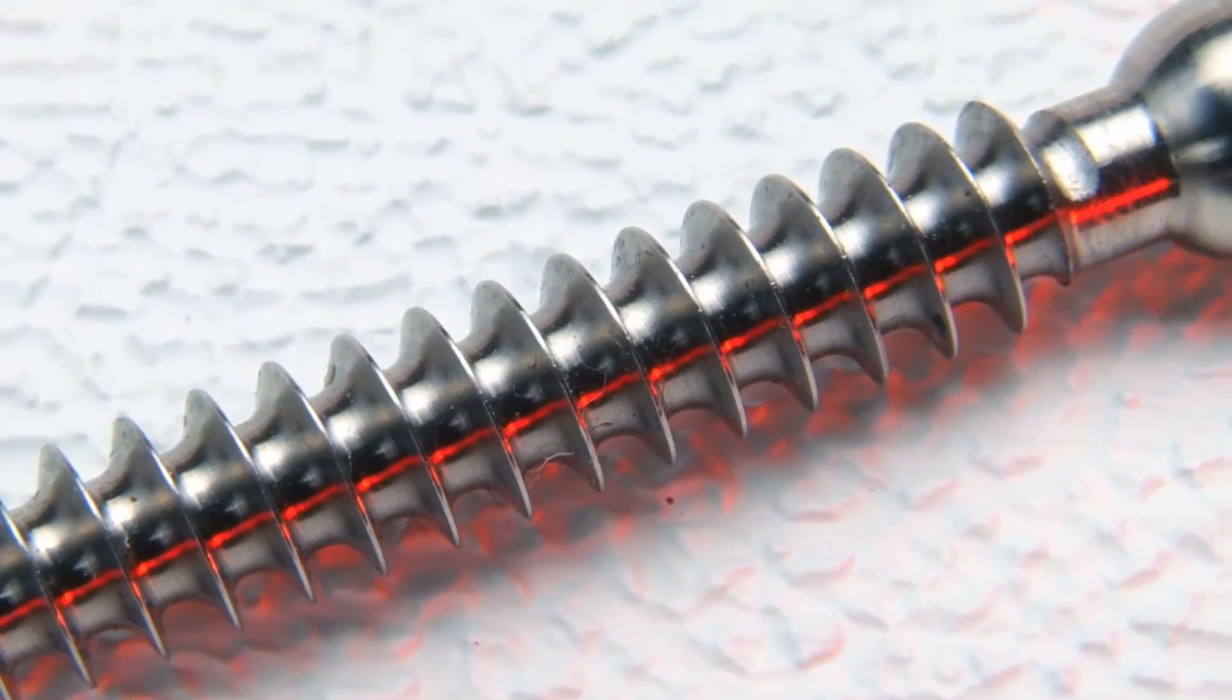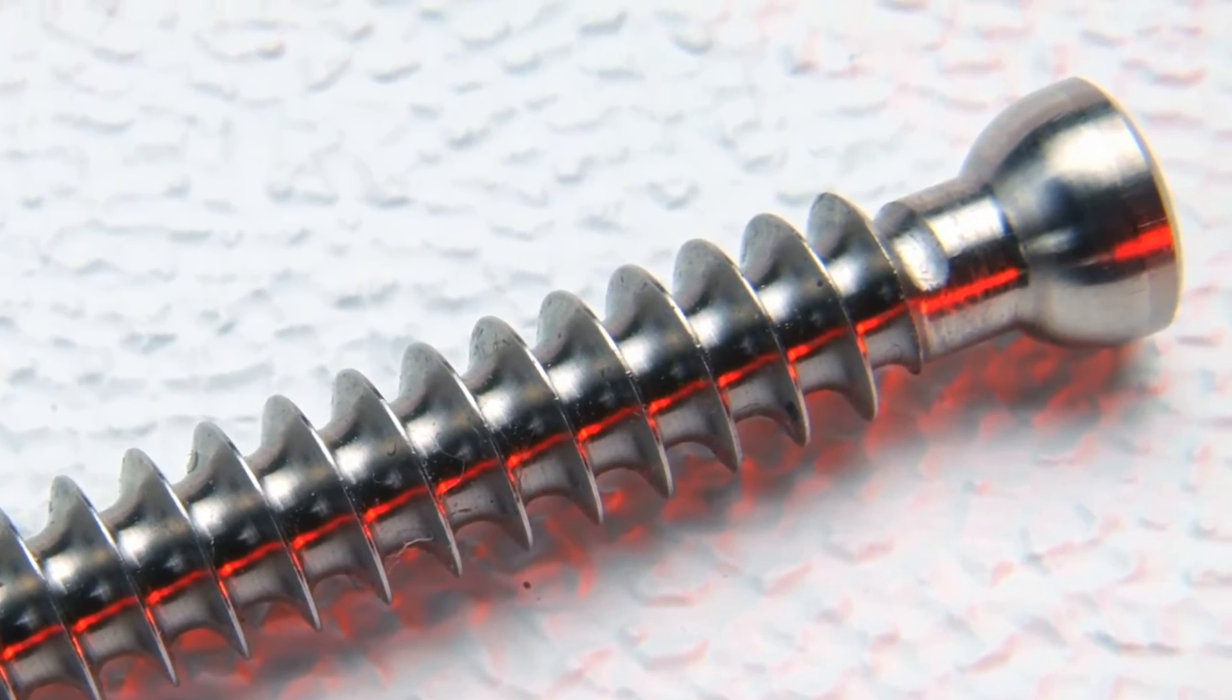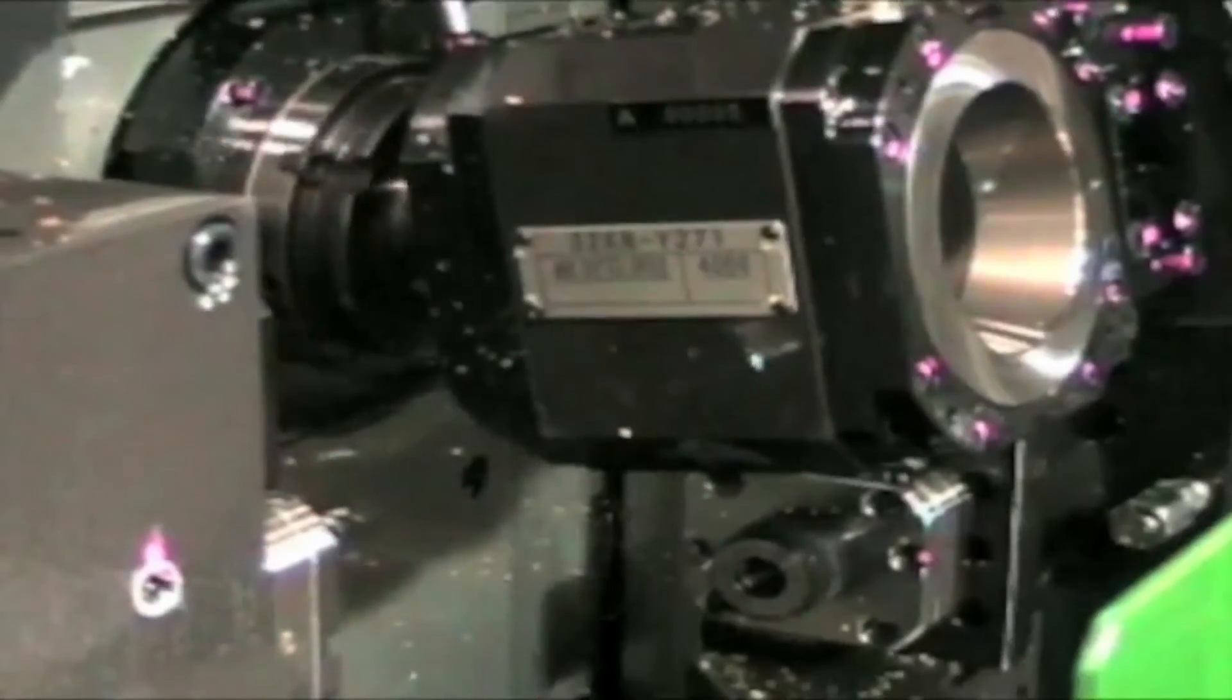In order to take advantage of the improved metal removal rates, machine tool builders must provide high power, large, robust whirling attachments.